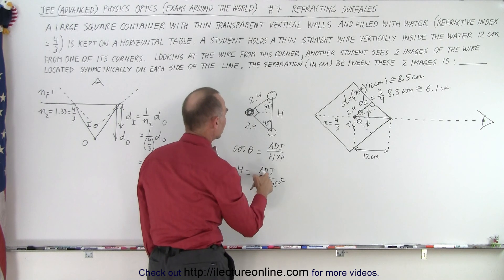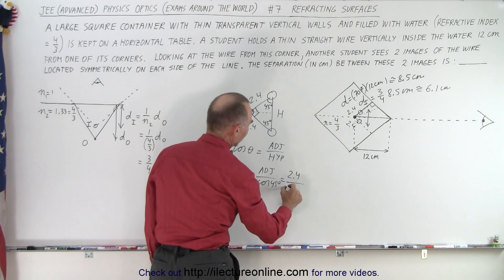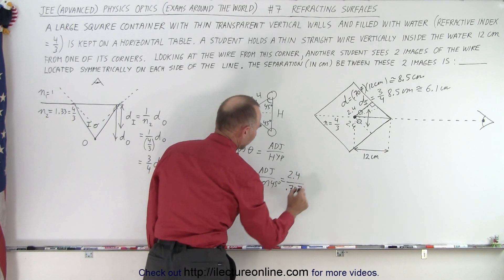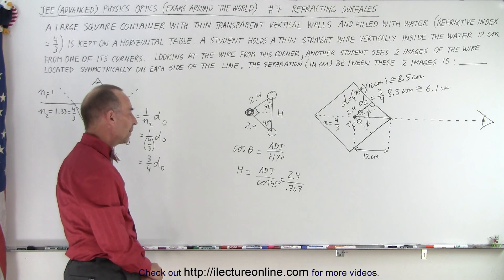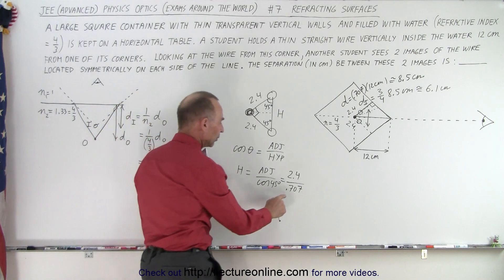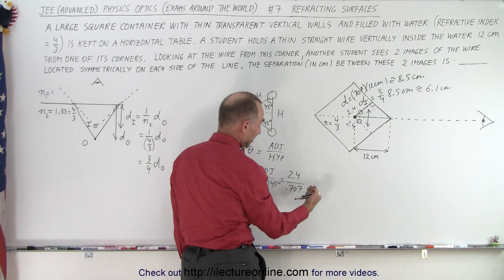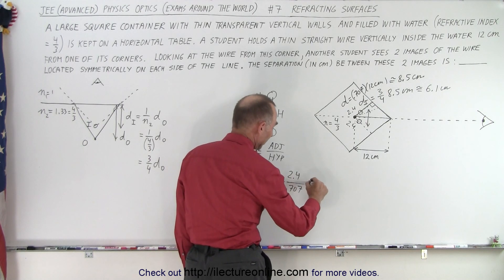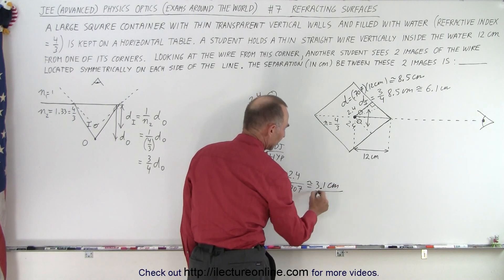In this case, that would be the adjacent side, which is 2.4 divided by the cosine of 45 degrees, which is 0.707. What's 2.4 divided by 0.707? 0.7 goes into 2.4 about 3 times, but it's a little bit bigger. So this would be about equal to about 3.1 centimeters.